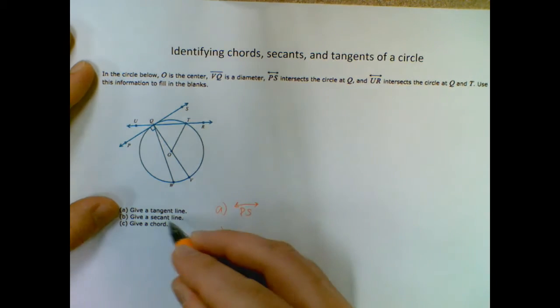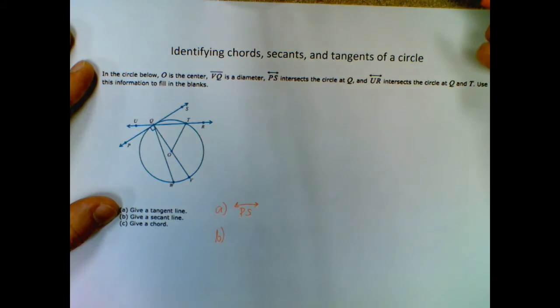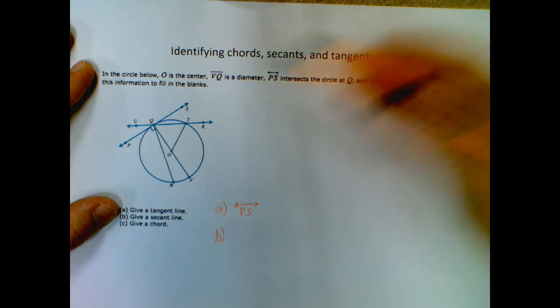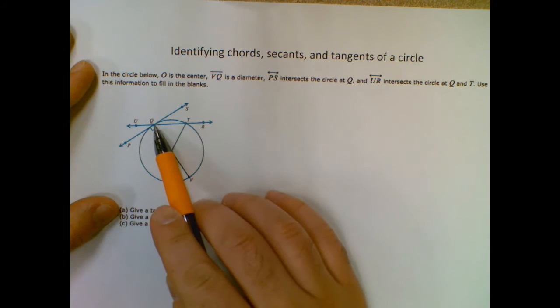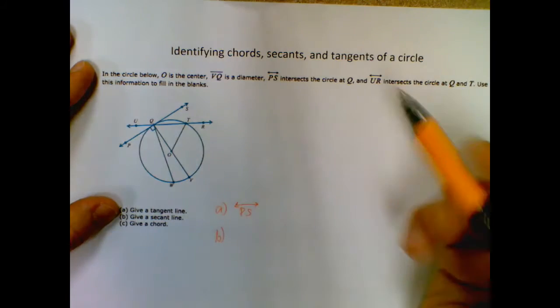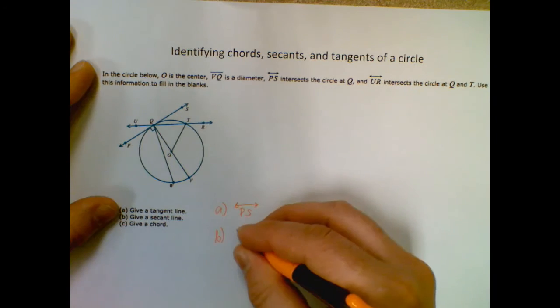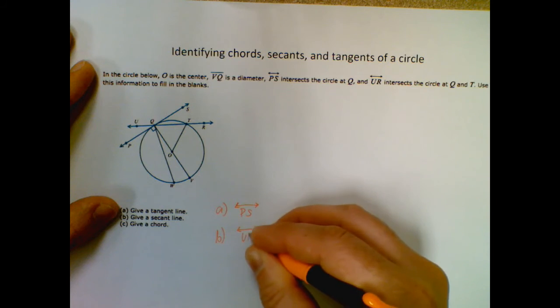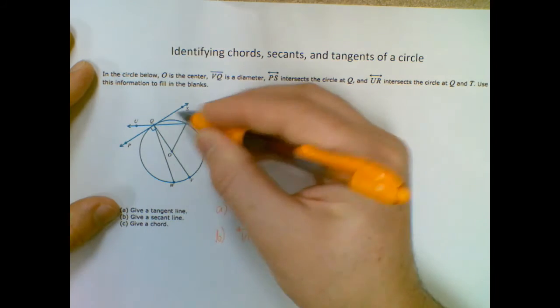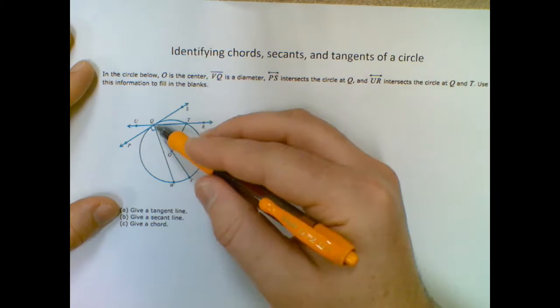Okay, I want a secant line, so that's a line that cuts through our circle but hits twice. So tangents hit once, secants hit twice. So I'm just going to go with this one because it's already there, so I have line UR because it hits at Q and T as opposed to SP that only hits at Q.